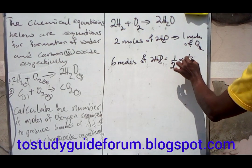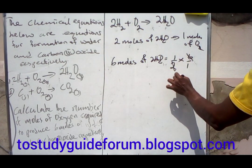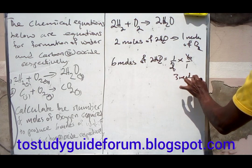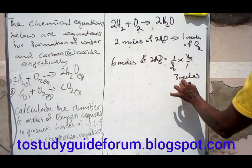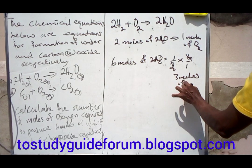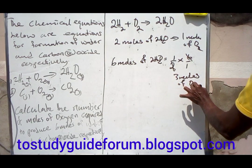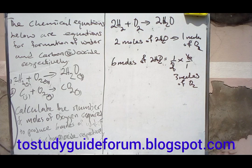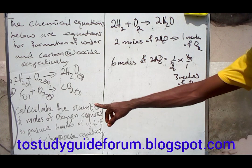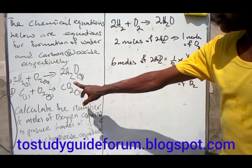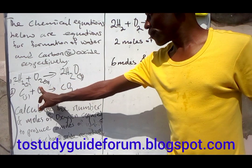That gives us three. So three moles of oxygen are required to produce six moles of water. Now let's move on to the next one, where we're looking for the moles of oxygen required to produce six moles of carbon dioxide.